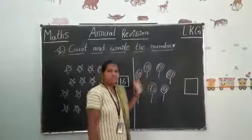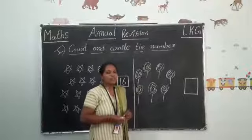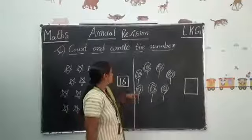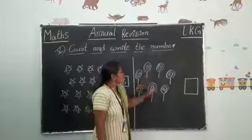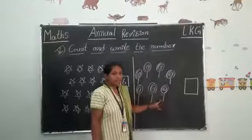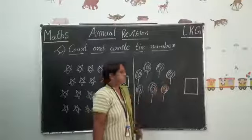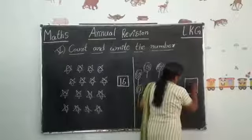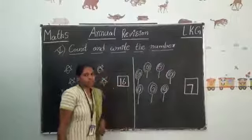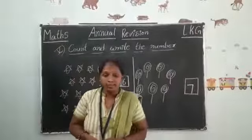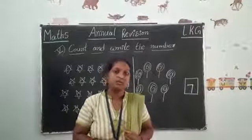Now what are these? These are lollipops. How many lollipops are there? Come on count it children. One, two, three, four, five, six, seven. Seven lollipops are there. So write in the writing box number seven. Okay. Now today fourth bit and fifth bit practice well children. Thank you.